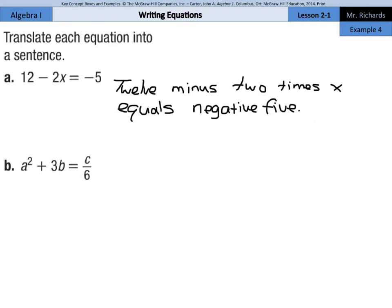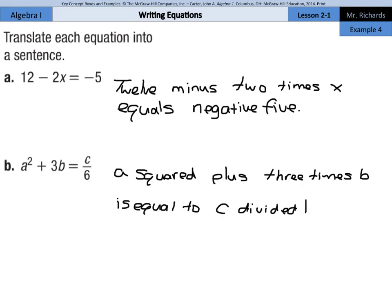What about the next one? A squared plus 3B equals C over 6. Well, how about A squared? And then we can just say plus 3 times B. Again, make sure we're using an operation there. And then we could also say is equal to. And then C over 6 is division. So, we can say C divided by 6.